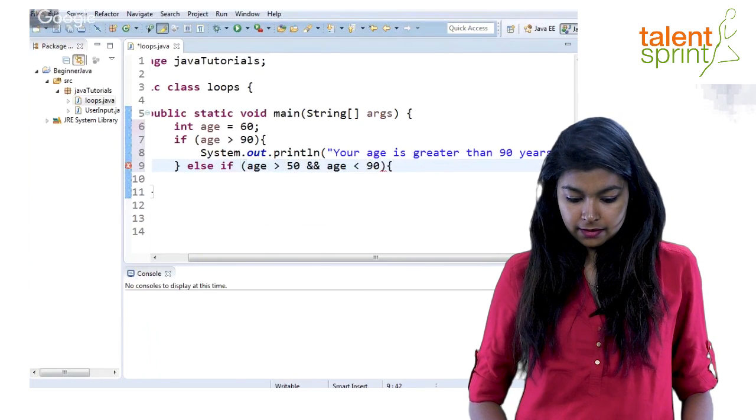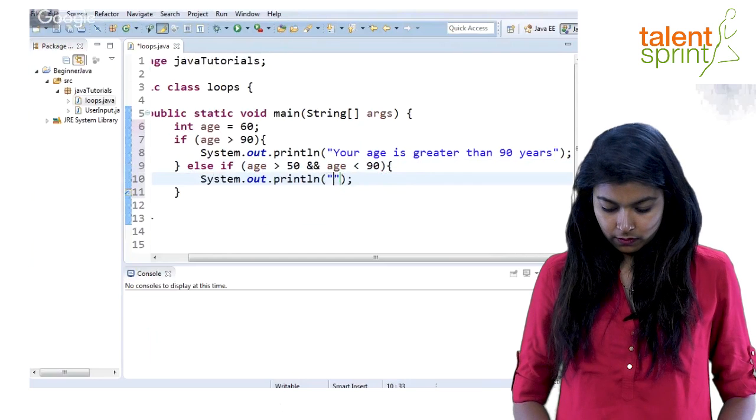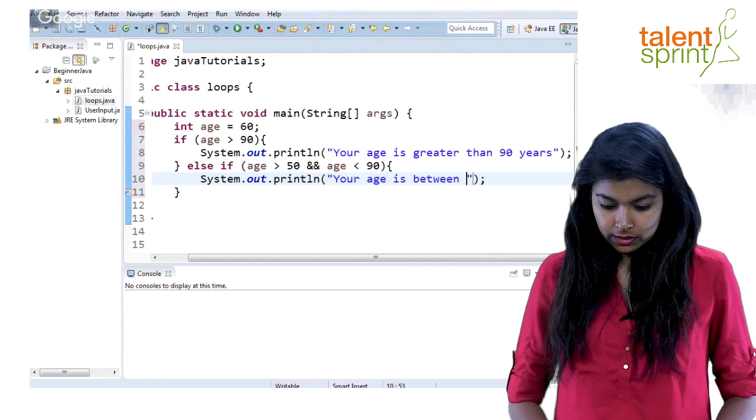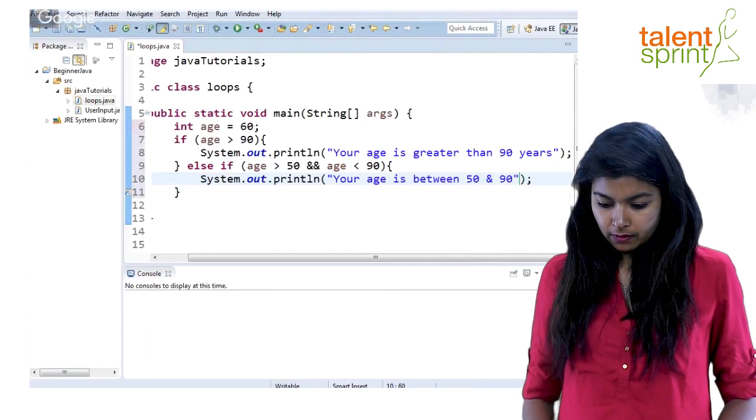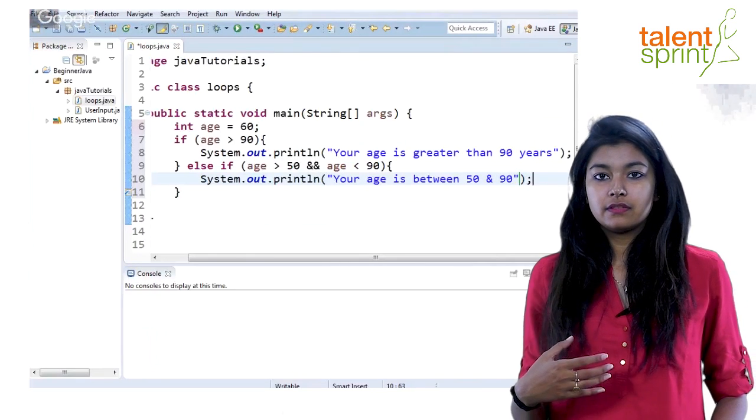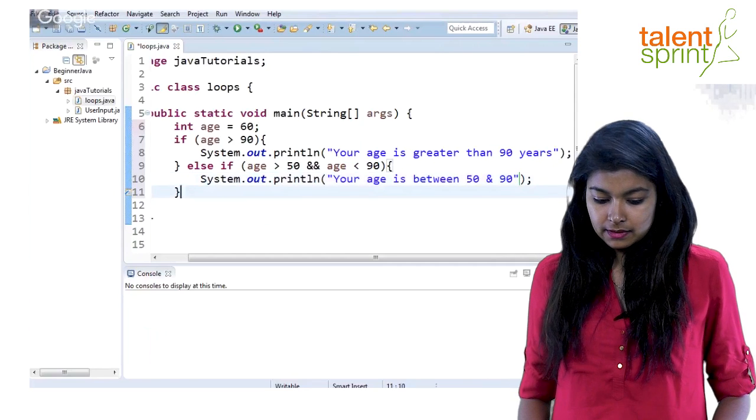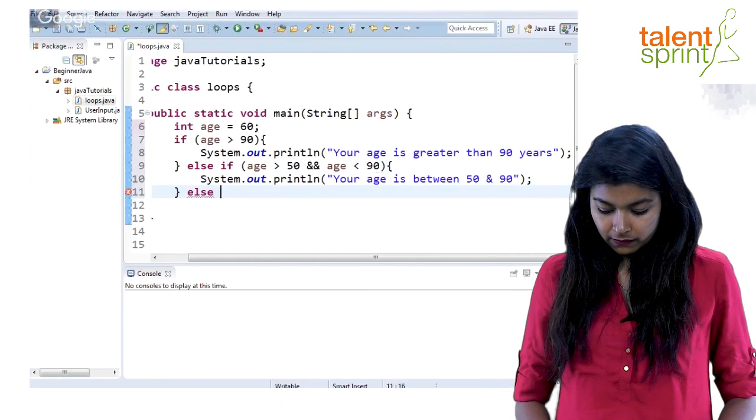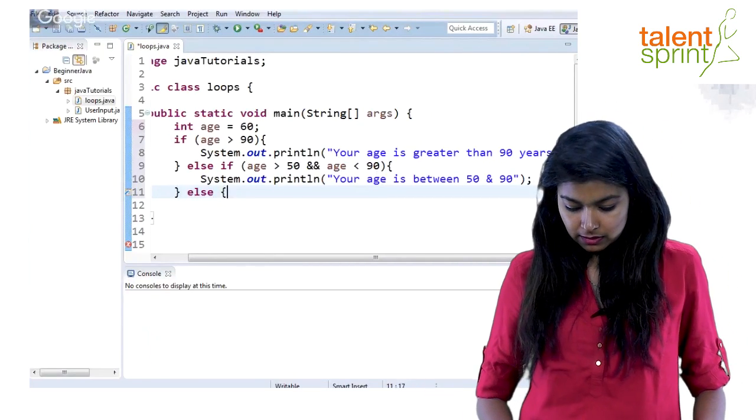So when this else-if executes you say your age is between 50 and 90. Fairly simple. Now finally if the condition doesn't even fall in 50 to 90 we just go ahead and simply finish this off with an else statement. So else, if the age is neither greater than 90 nor between 50 and 90.